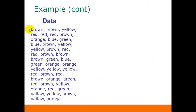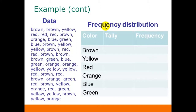So here's our data again. To construct our frequency distribution, we're basically just going to make a table that lists all the categories for the data — in this case the different colors. Then we're just going to go through this list of data and put a tally mark in each category as we go through the list. When we're done with that, we'll count up the frequencies for each color — in other words, how many M&Ms of that color were in the bag.